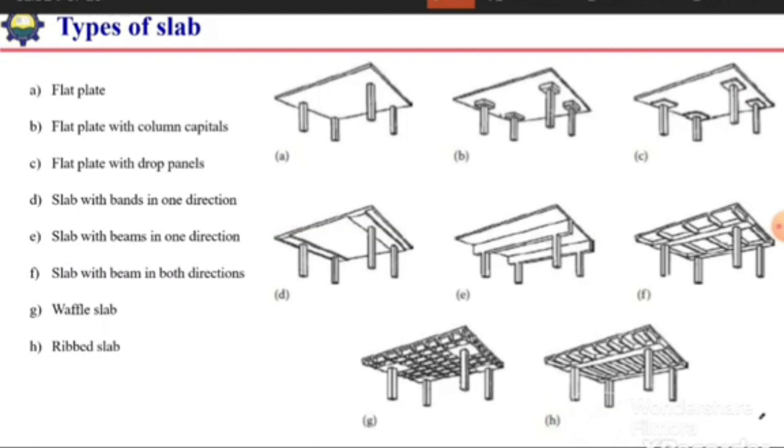Here are some types of slabs, irrespective of the aspect ratio or whether it's one-way or two-way. We have some other types based on the position of the beams. First of all is flat plate.